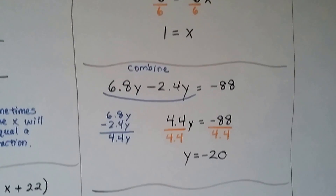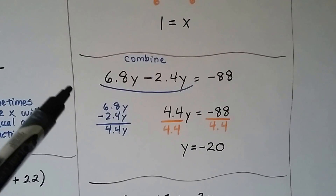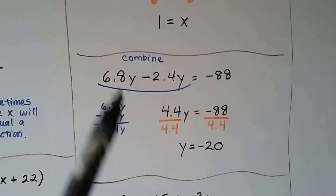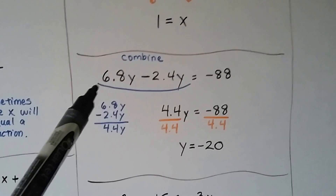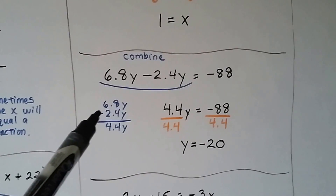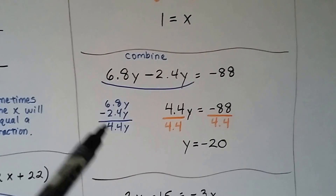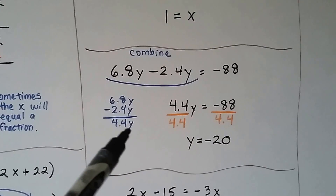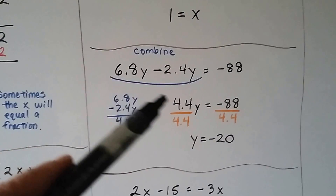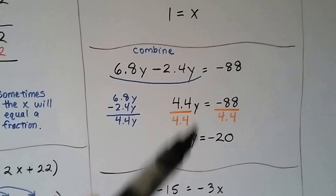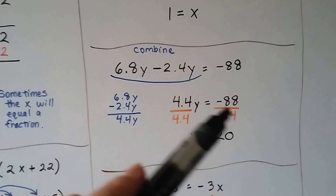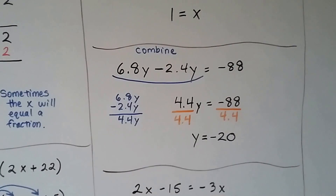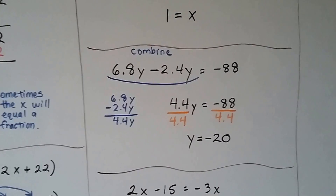Here we've got some decimals: 6.8y minus 2.4y equals negative 88. We just combine them — 6.8y minus 2.4y is just like a regular subtraction problem and we get 4.4y. So now we have 4.4y equals negative 88. We divide both sides by the coefficient 4.4 and we get y equals negative 20.